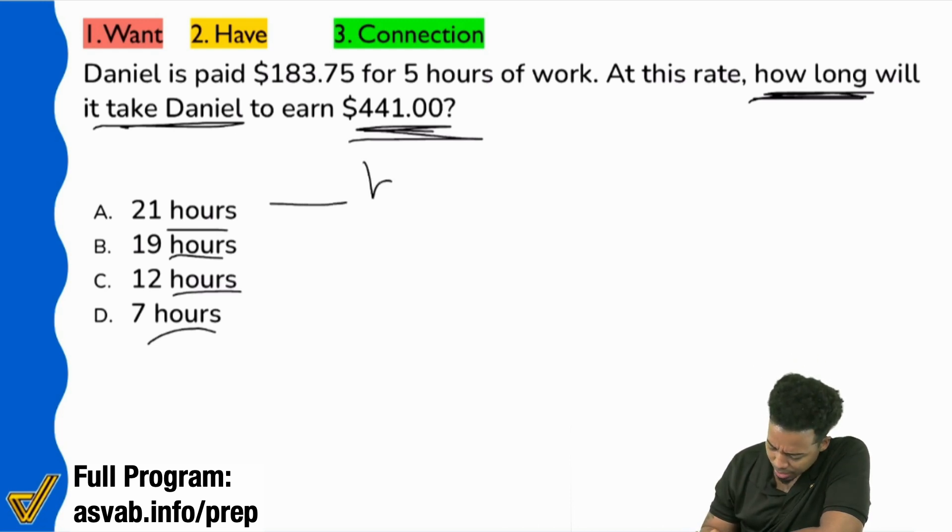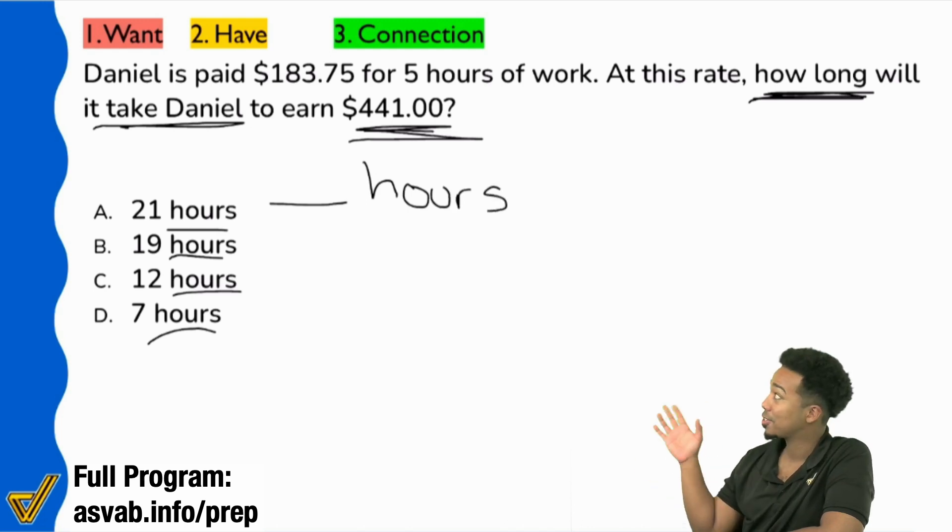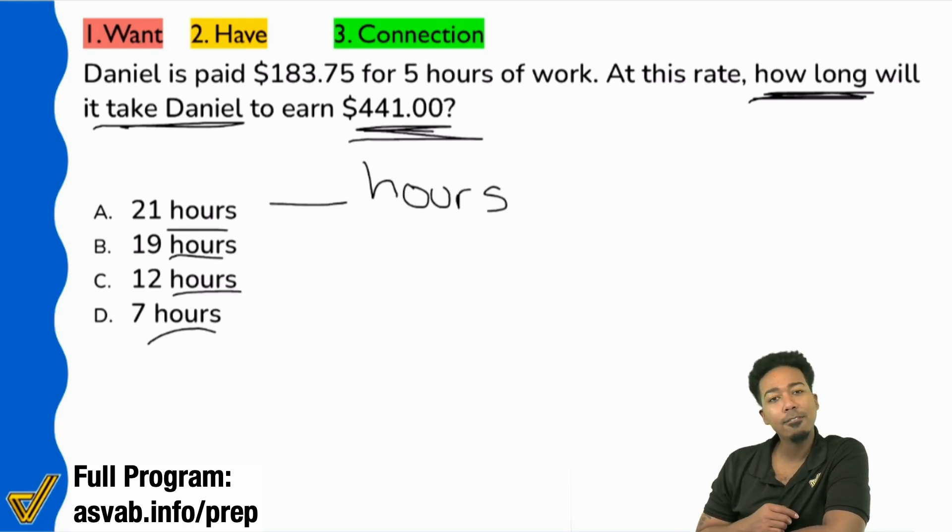And I'm using my finger here, so excuse the kindergarten handwriting. We're looking for blank hours. Did they give you any information to associate directly with those numbers of hours? Were you given anything to associate directly in the same sentence, potentially?